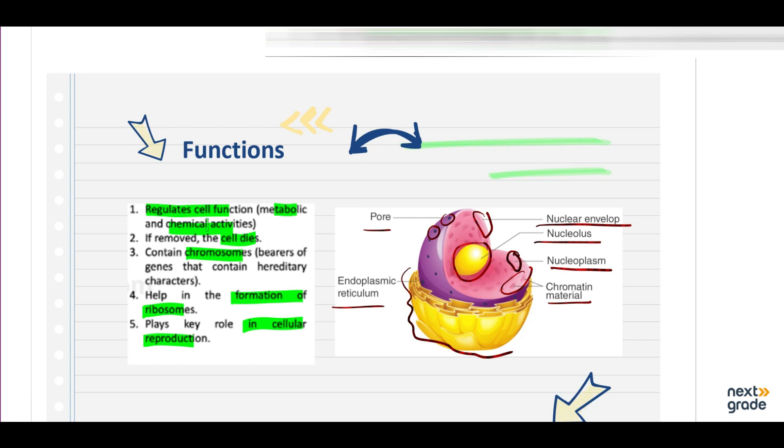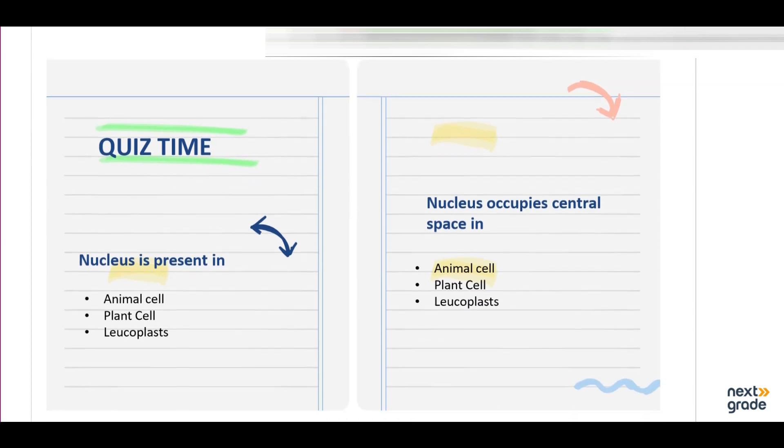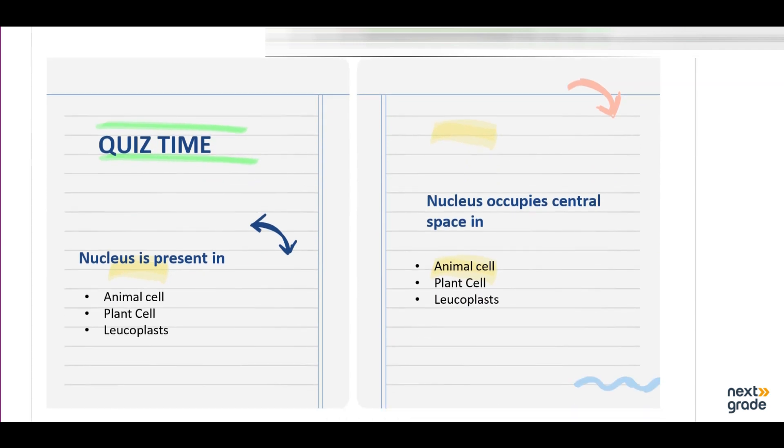So, nucleus is present in animal cells, plant cells, and leucoplasts. We know that nucleus is present in both animal and plant cells, so here 'both' is the correct option. Then, nucleus occupies the central space in animal cells, in plant cells, or in leucoplasts?